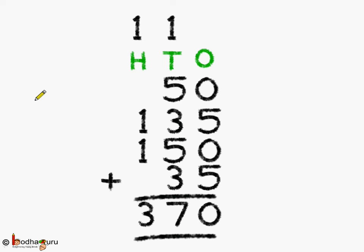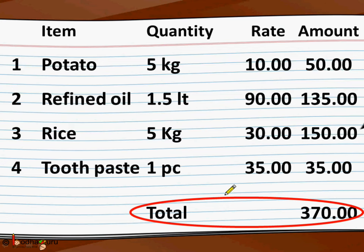Adding all the costs: Rs. 50 (potatoes) + Rs. 135 (oil) + Rs. 150 (rice) + Rs. 35 (toothpaste). Adding step by step: 5 + 5 = 10, write 0 carry 1; then 5 + 5 + 3 + 3 = 16, plus carry 1 = 17, write 7 carry 1; then 1 + 2 + 3 = write 3. The total amount is Rs. 370.